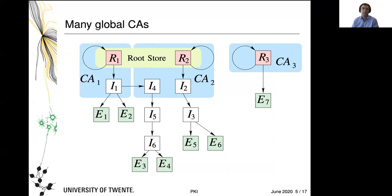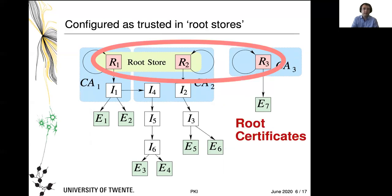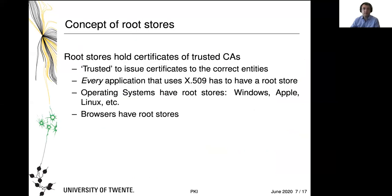In practice we have many global CAs on the WebPKI, and we have root stores. Root certificates are, in essence, the anchor points — the roots of the forest of trees we spoke about earlier. Root stores hold root certificates, and these are the certificates of trusted CAs.